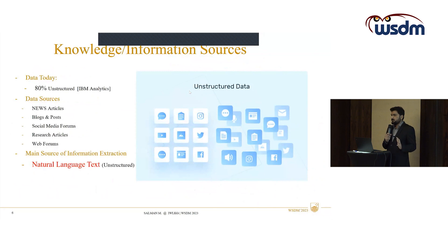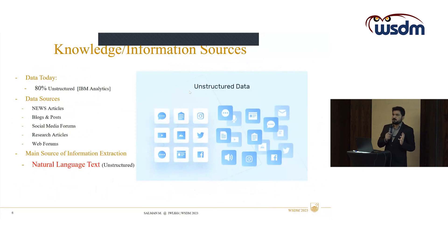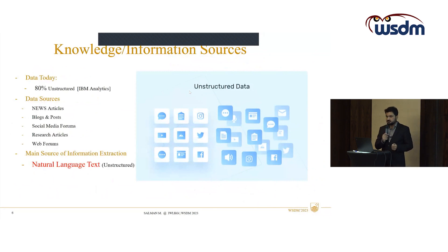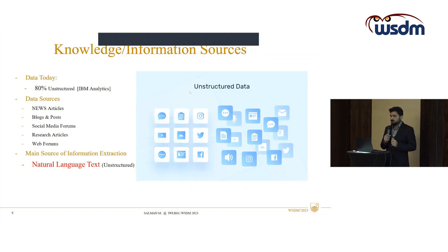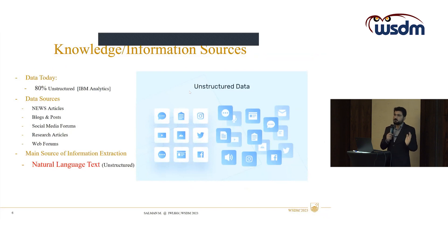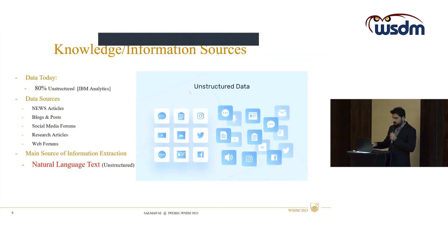80% of this huge amount of data is unstructured, so we need methods that can efficiently extract information from unstructured datasets. If we look into the data sources, these are mainly news articles, blogs, social media forums, and research articles. The main source of information extraction for knowledge graphs is natural language text.